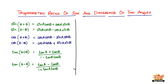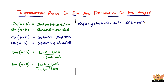I'll quickly list them down for you. First one is sine of A plus B into sine of A minus B, which equals sine squared A minus sine squared B. At the same time it can also be equal to cos squared B minus cos squared A.